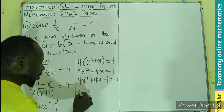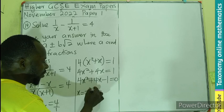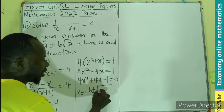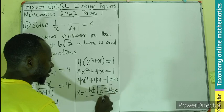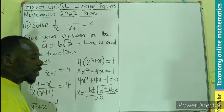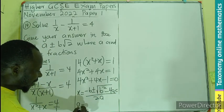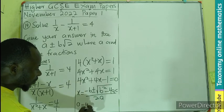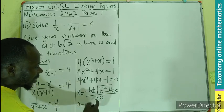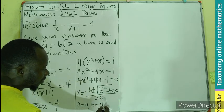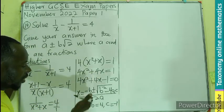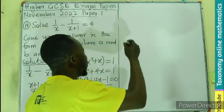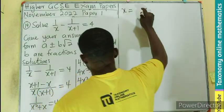We say that x will be equal to minus b plus or minus the root of b squared minus 4ac divided by 2a. Where the a is the first coefficient, the b is the second coefficient, and the c is the constant.